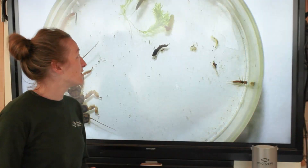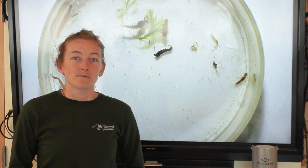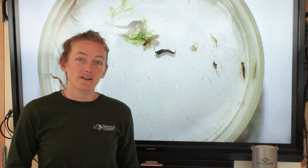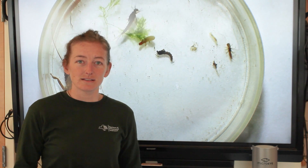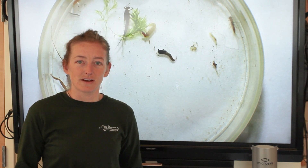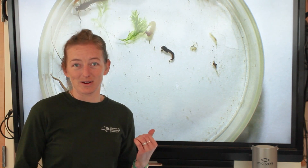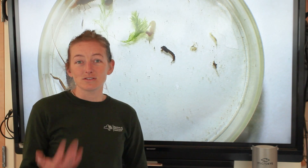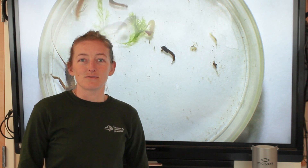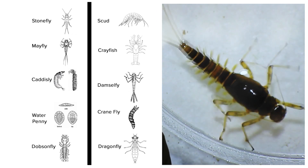These macroinvertebrates are also important in the food chain. They're living parts of their life, or their entire life, in the stream — eating some of the vegetation that you can find there, or eating smaller macroinvertebrates, and then also being eaten by predators that you can find in the stream, like fish.